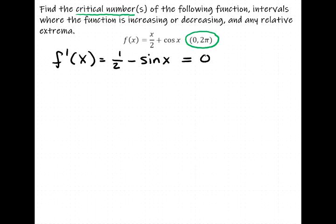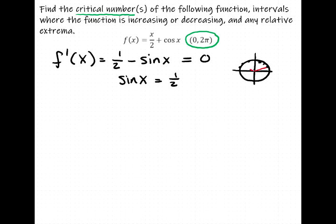Solving 1/2 − sin(x) = 0 means we need sine of x equal to 1/2. Looking at the unit circle and the special angles in each quadrant, sine equals 1/2 at an angle of π/6 or 5π/6. So those are our two critical numbers: π/6 and 5π/6.